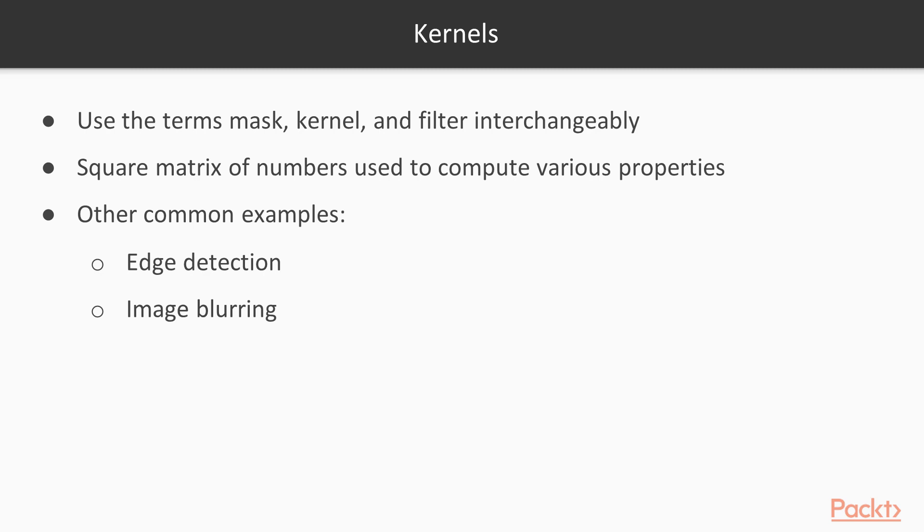What these essentially mean is a square matrix of numbers that are used to compute various properties or characteristics in an image. Some other common examples of such kernels, filters, or masks are edge detection, image blurring and more.